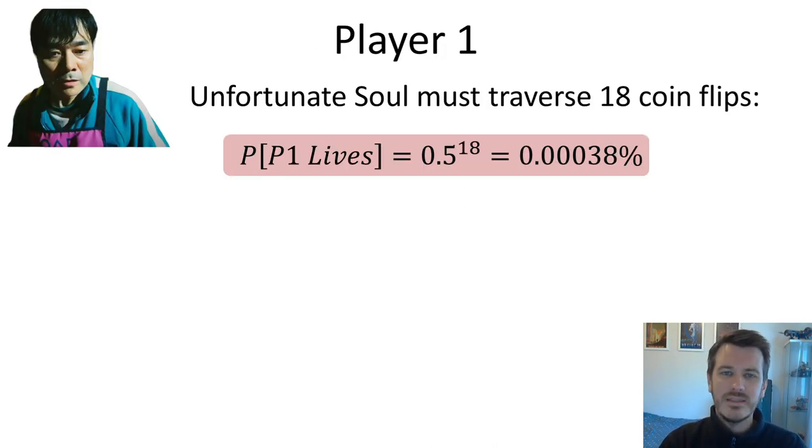So let's get started. Poor old player 1, this one's the easiest and most trivial to figure out. This unfortunate soul has to traverse 18 separate decisions in a row and guess correctly 18 times in a row. So his chances of surviving are in the region of 1 in 300,000-ish. Exceptionally unlikely that this poor chap is going to live. His main job is to just try to do his best and solve as much of the puzzle as he can.